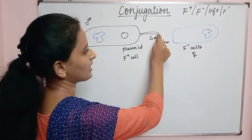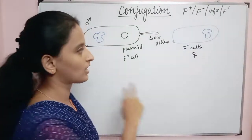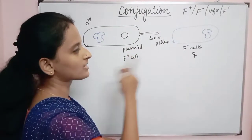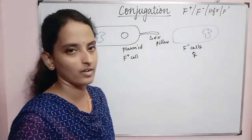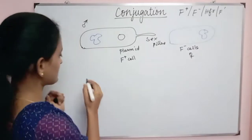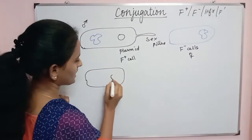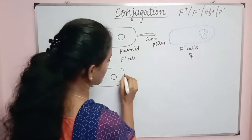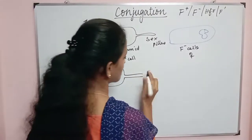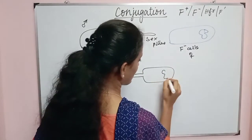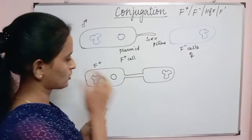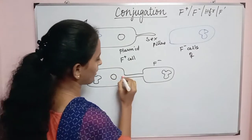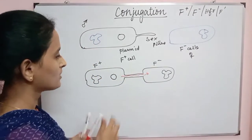So how does conjugation work? In adjacent bacteria, the F+ cell is connected to the F- cell via a sex pilus. Connected through the sex pilus, the plasmid can be transferred. This F+ bacterium contains a plasmid and chromosomal DNA. The F- cell contains only chromosomal DNA — the plasmid is absent. They are connected with a sex pilus.